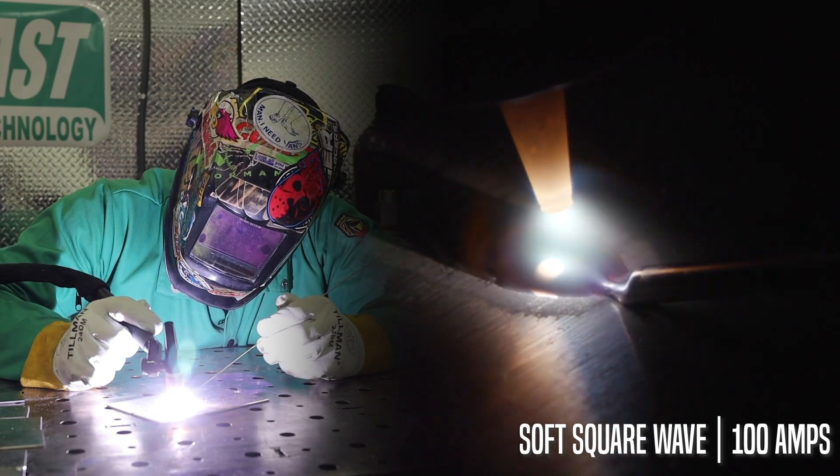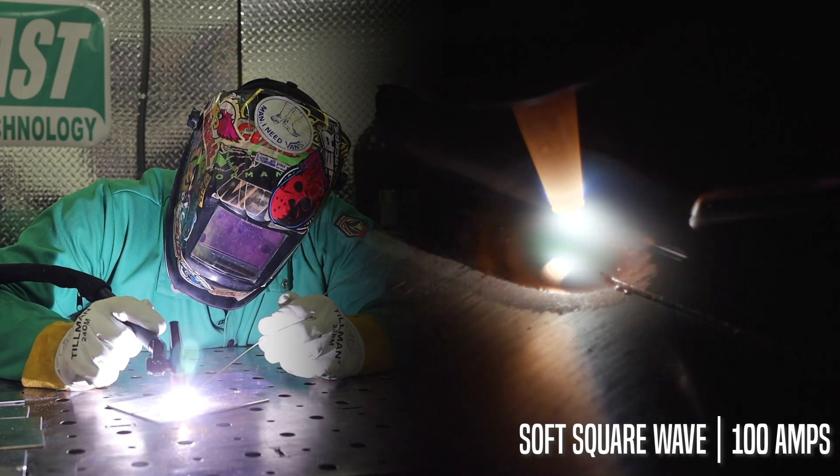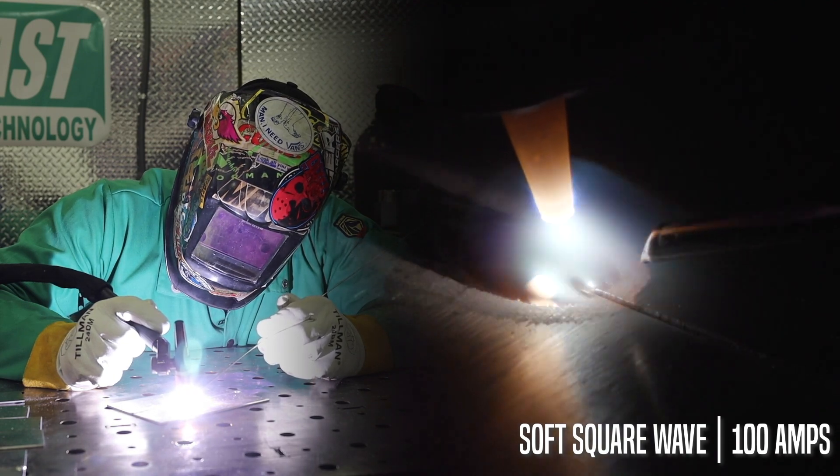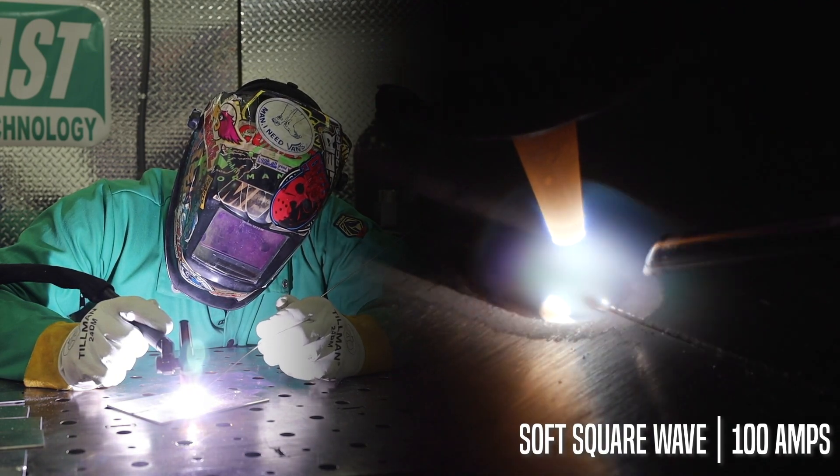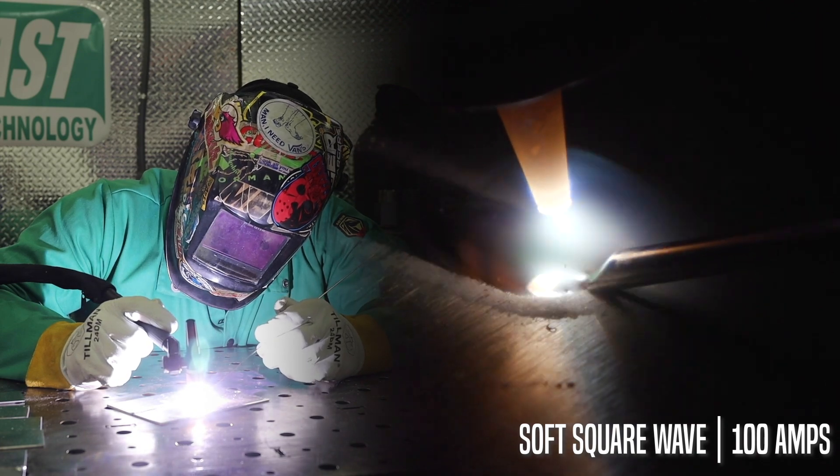We're going to be running all these around 100 amps on the machine, probably using 85 to 90 amps on the pedal. We're at 120 hertz, 35% electrode positive on our balance.